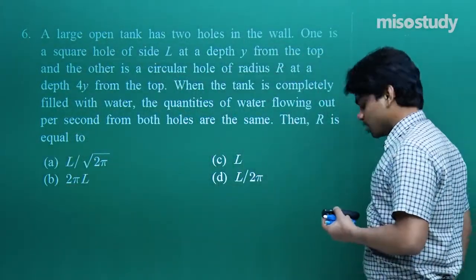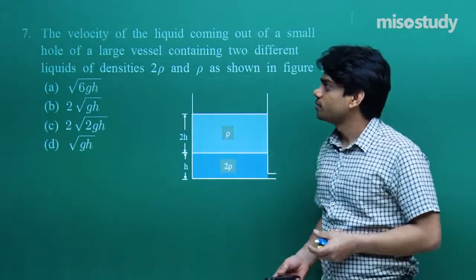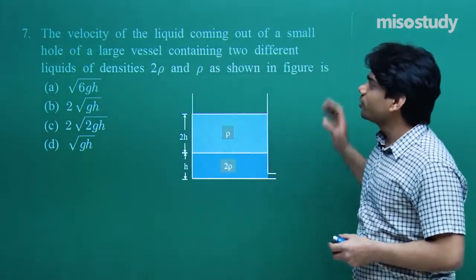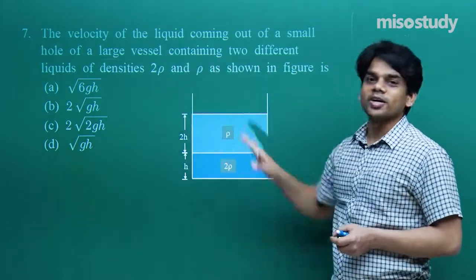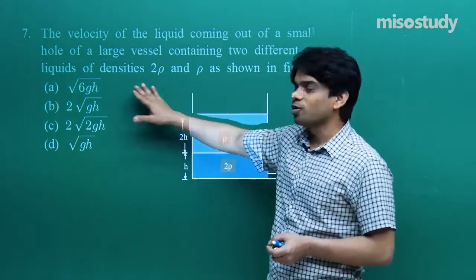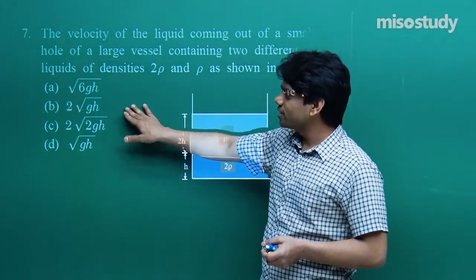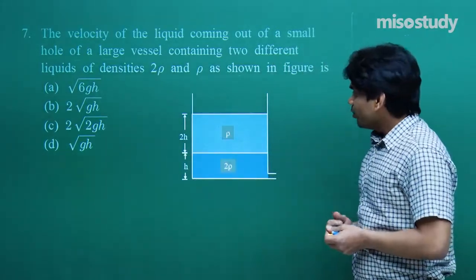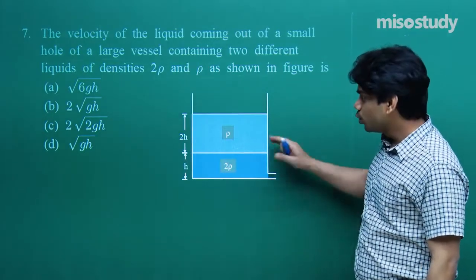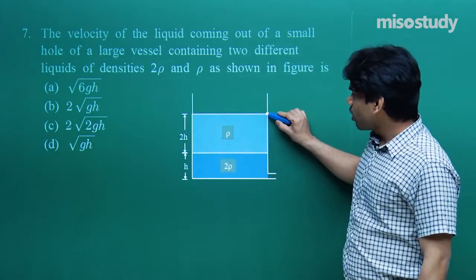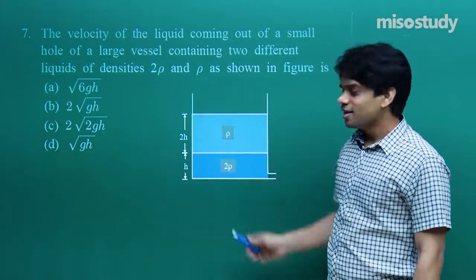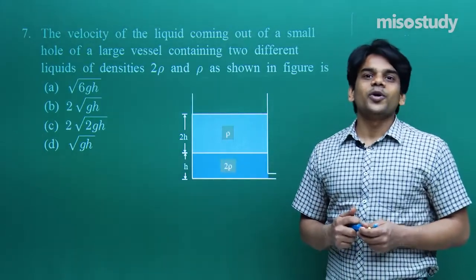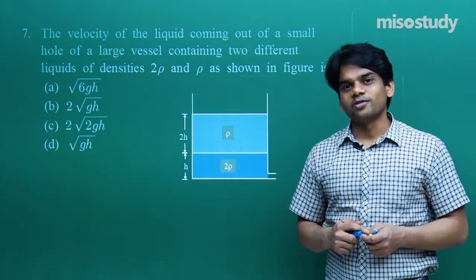Let's go ahead with question number seven. The velocity of the liquid coming out of a small hole at the bottom of a large vessel containing two different liquids of density 2ρ and ρ — as shown in the figure — is: (a) √(6gh), (b) √2·√(gh), (c) 2√(2gh), (d) √(gh). The vessel has a hole at the bottom. One liquid has density ρ with height 2h, and the other has density 2ρ with height h.